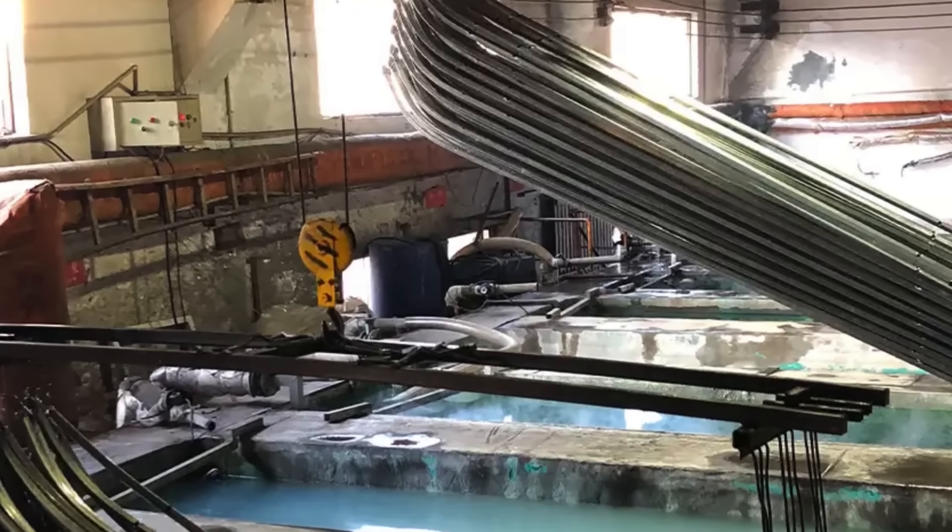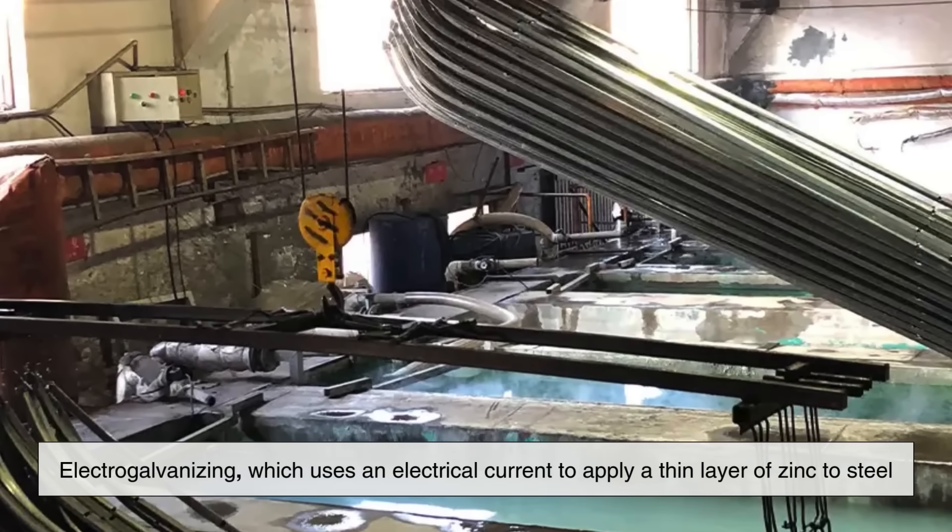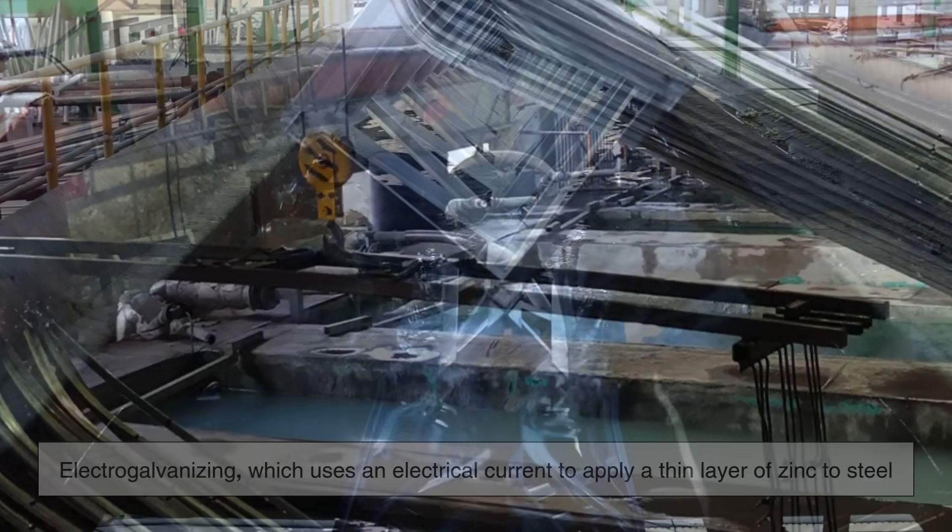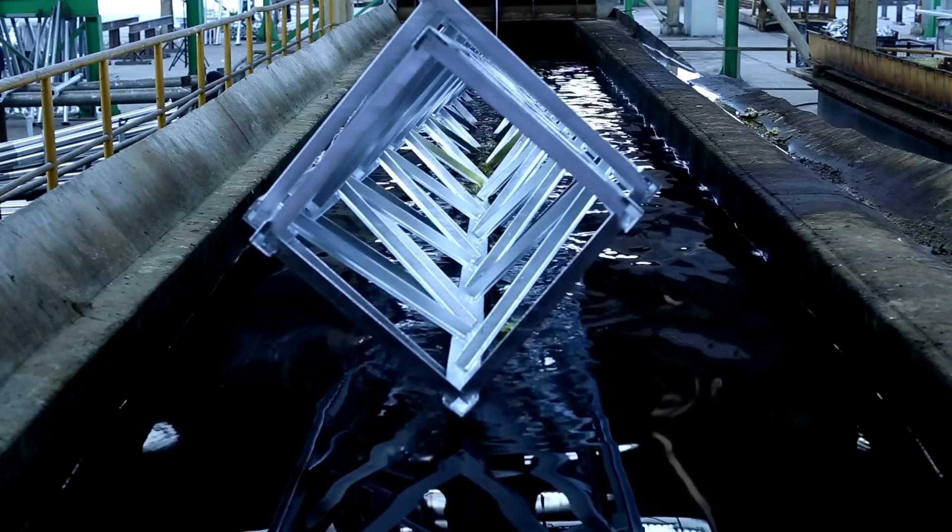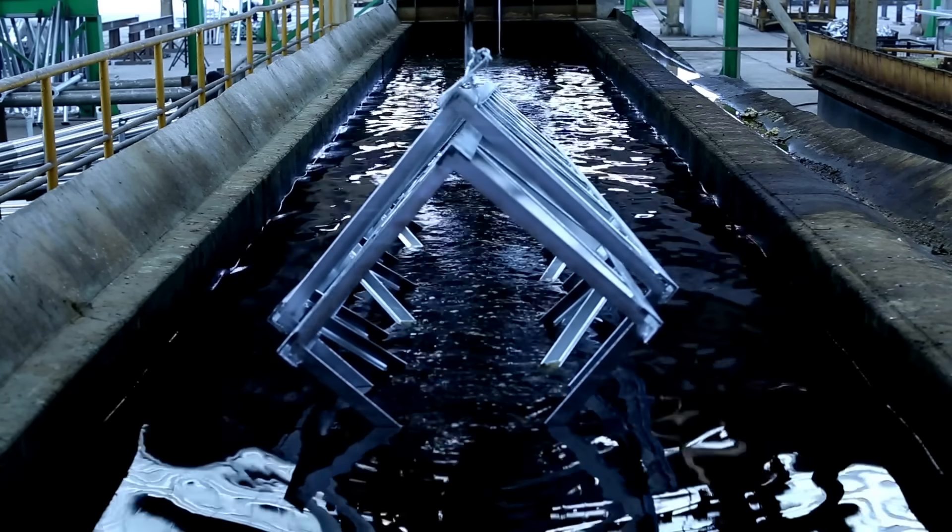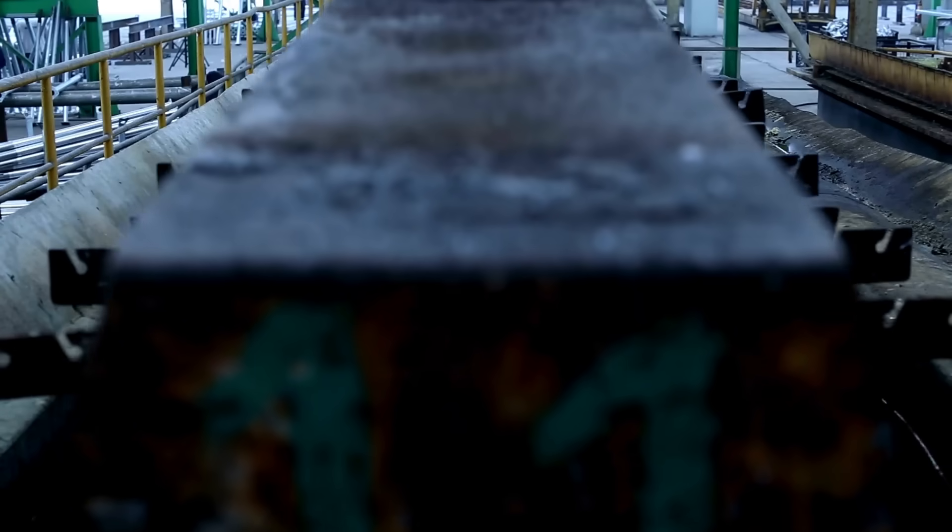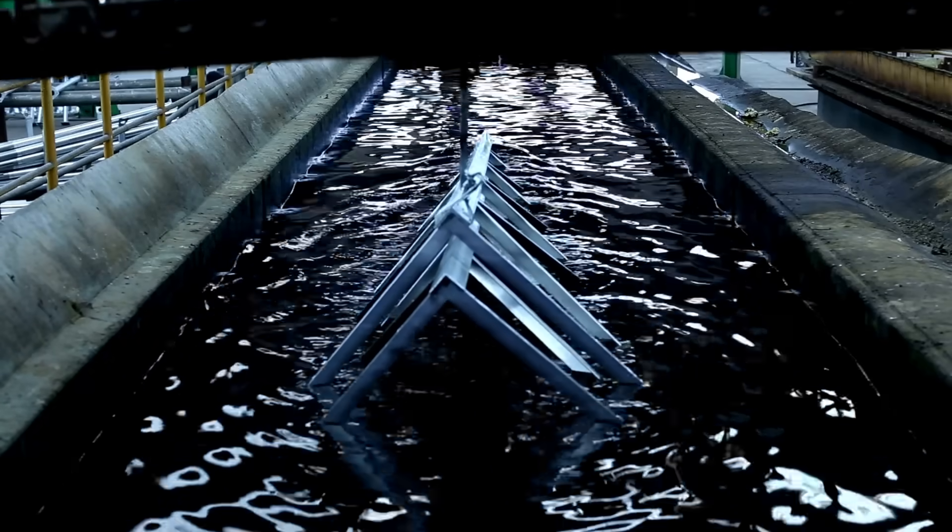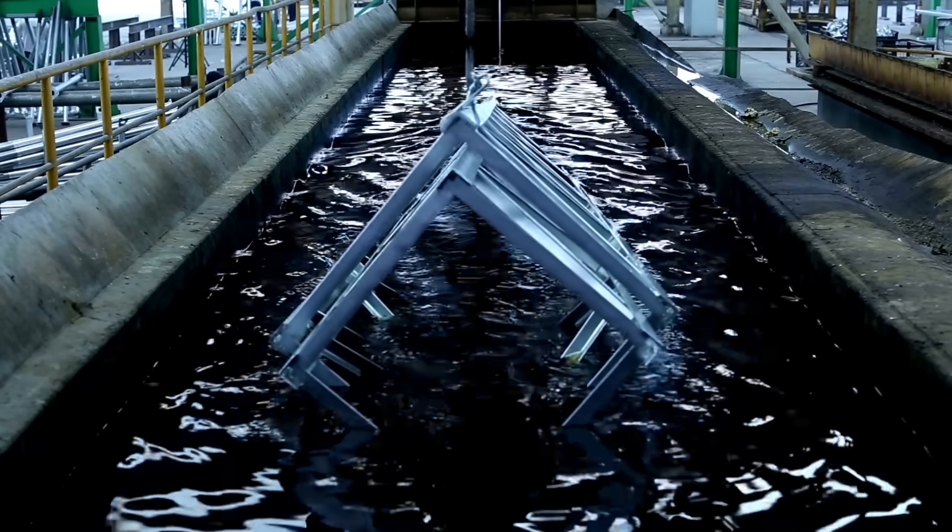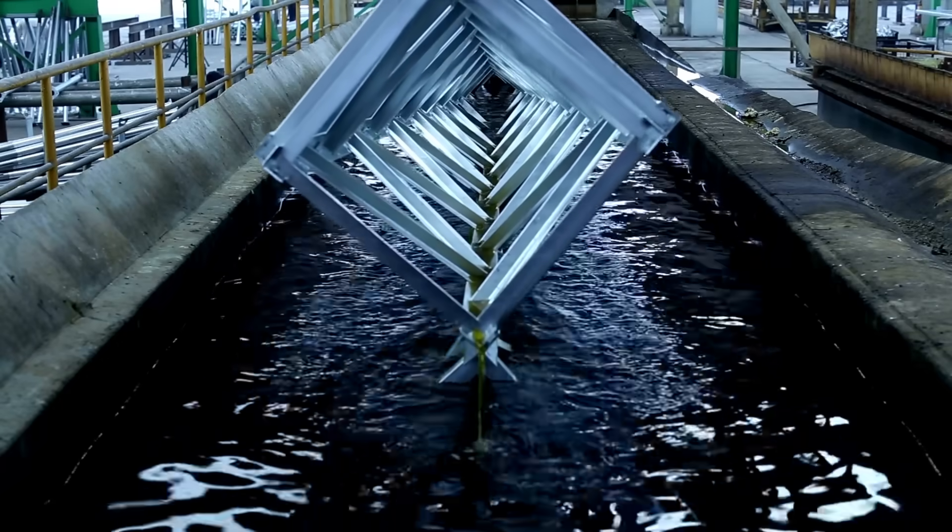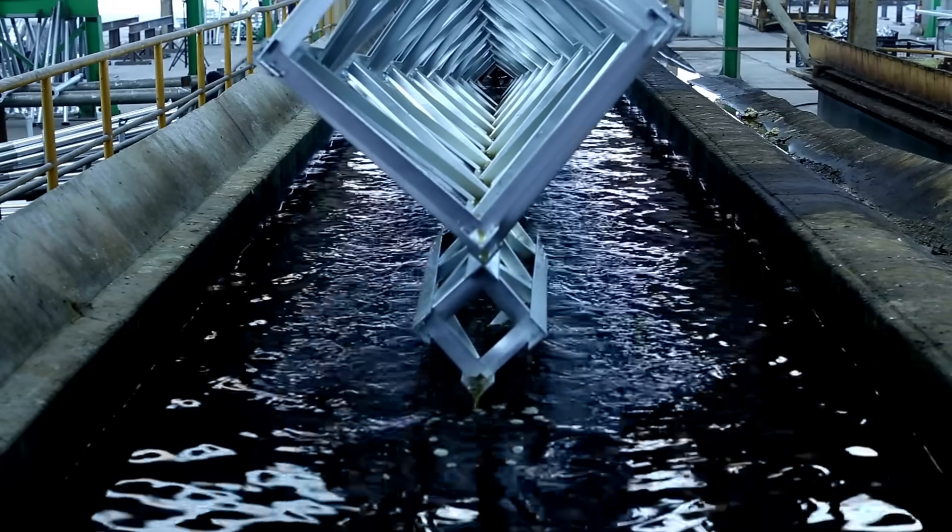There's also a method called electro-galvanizing, which uses an electrical current to apply a thin layer of zinc to steel. This process creates a smoother, more refined finish that's often used in automobiles, appliances, and electronics where appearance matters. Because electro-galvanizing uses a thinner zinc coating, it's not as corrosion-resistant as hot-dip galvanizing, but it's perfect for parts that need a clean, uniform, and paint-ready surface.